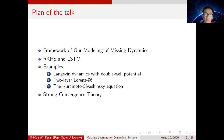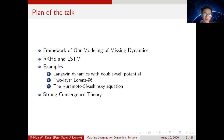This is the plan of my talk. I'll first introduce the framework of our modeling of missing dynamics. For missing dynamics, we will use two machine learning tools: one is called reproducing kernel Hilbert spaces representation, RKHS representation, and another is called long-short-term memory network, LSTM network. Then I will show you three examples of human dynamics with double-well potential, Lorenz-96 model, and the Kuramoto-Sivashinsky equation. Finally, I will show you the convergence theory.